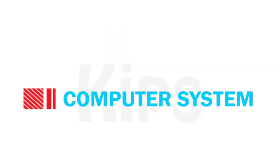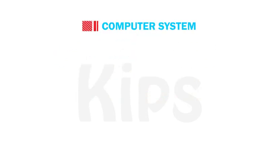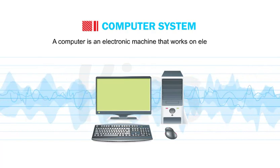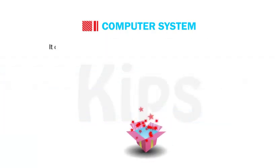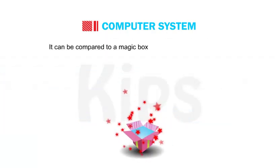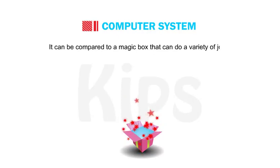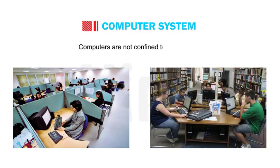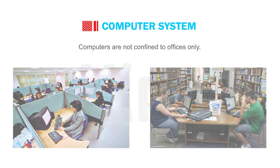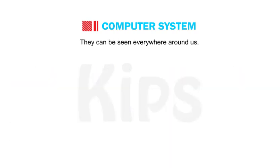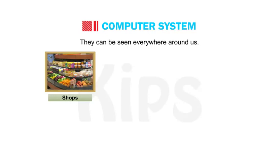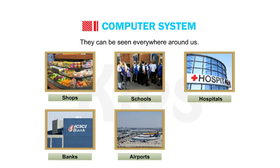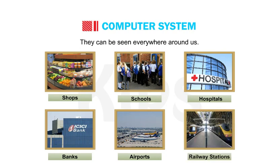Let us first talk about the computer system. A computer is an electronic machine that works on electricity. It can be compared to a magic box that can do a variety of jobs. Computers are not confined to offices only. They can be seen everywhere around us, like shops, schools, hospitals, banks, airports, railway stations, etc.